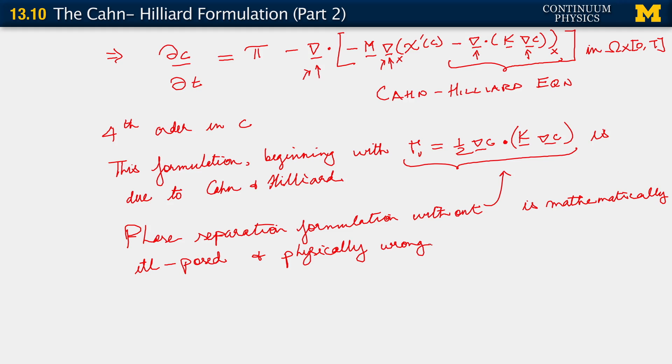It's mathematically ill-posed and physically, it is not consistent. It does not represent what is happening. It's physically wrong. And we saw, we talked about how this physical incorrectness manifests itself in the fact that the formulation does not tell us whether the particles we get, the beta phase particles that we get, organize themselves into many small particles or few large particles. And what the Cahn-Hilliard formulation does is to penalize the amount of interface.